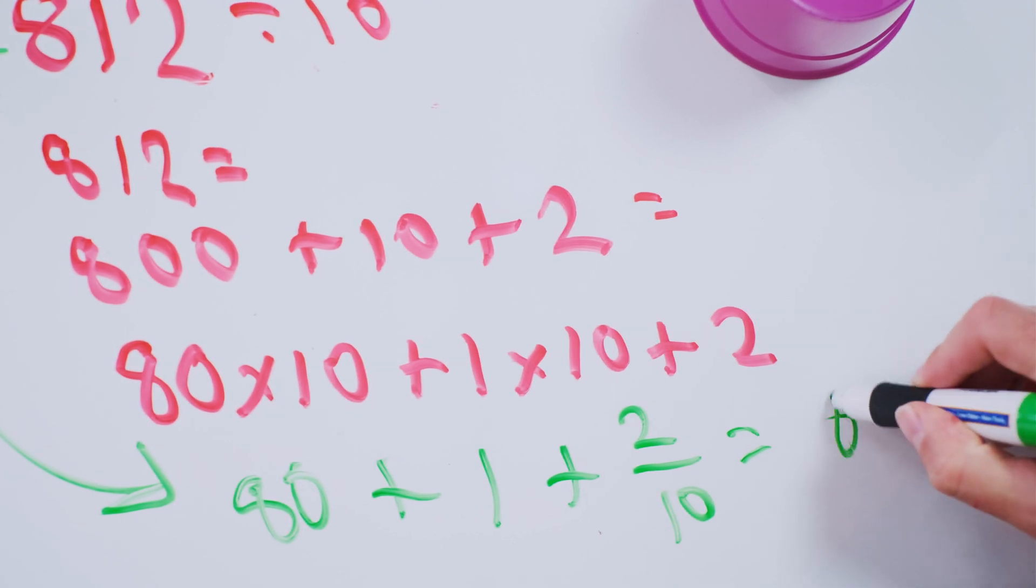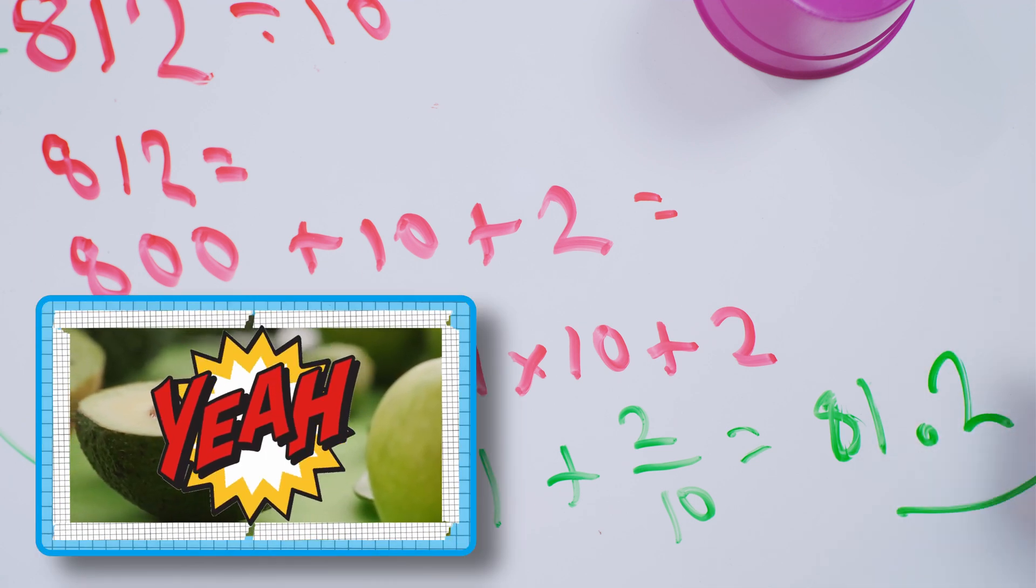This is 81 and two-tenths. Well, two-tenths is also known as point two. Hmm.